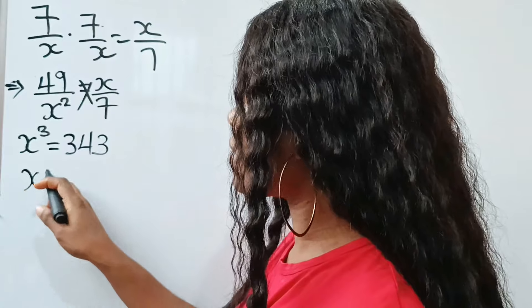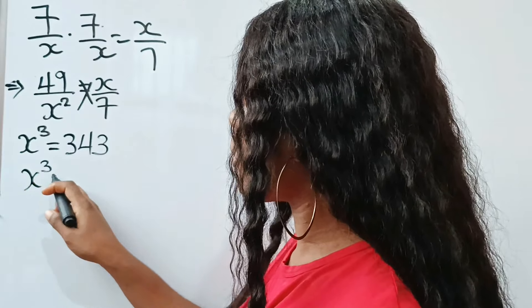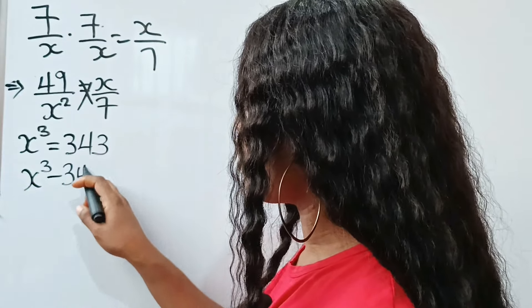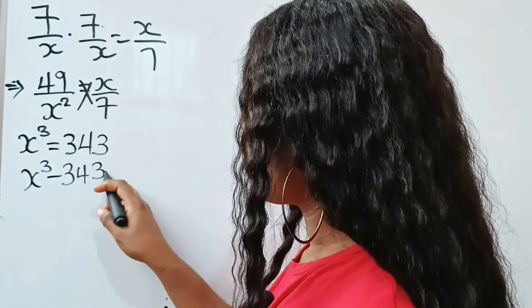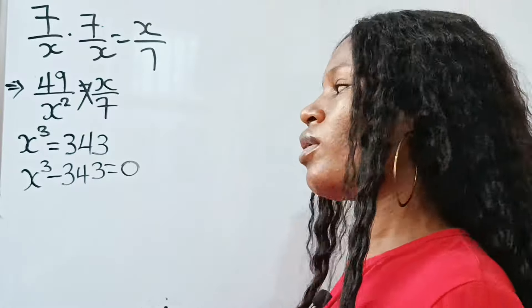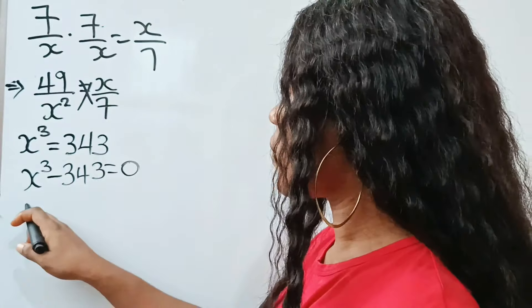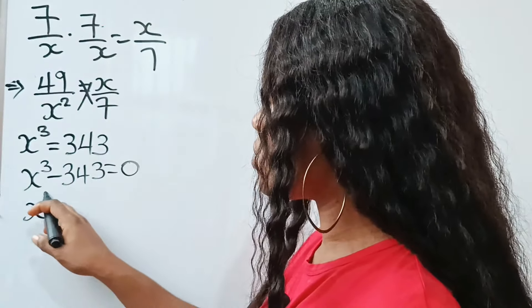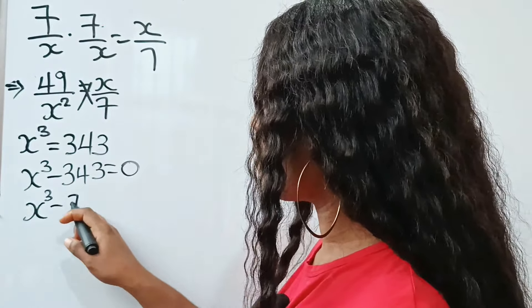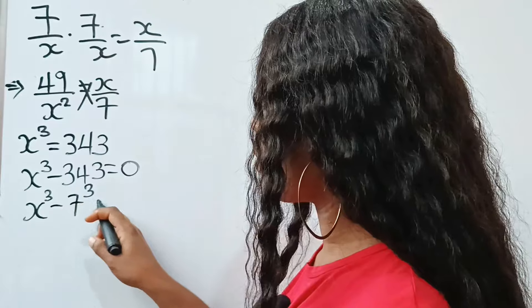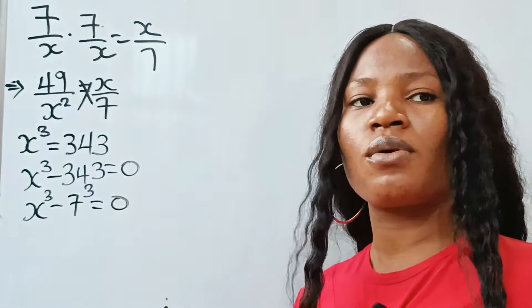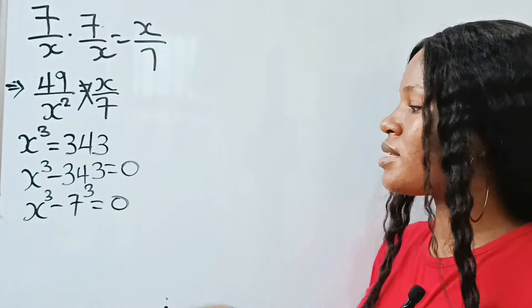So we have x to the power of 3 minus 343 is equal to 0. And this is the same as x to the power of 3 minus 7 to the power of 3 is equal to 0.